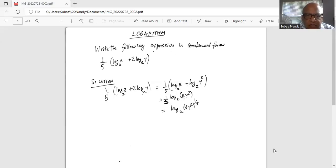So when you have a multiple in front of a logarithm, it's actually the exponent form. Now inside the parenthesis, both the terms are logarithm to the base 2. So we can combine them and use the multiplication rule.